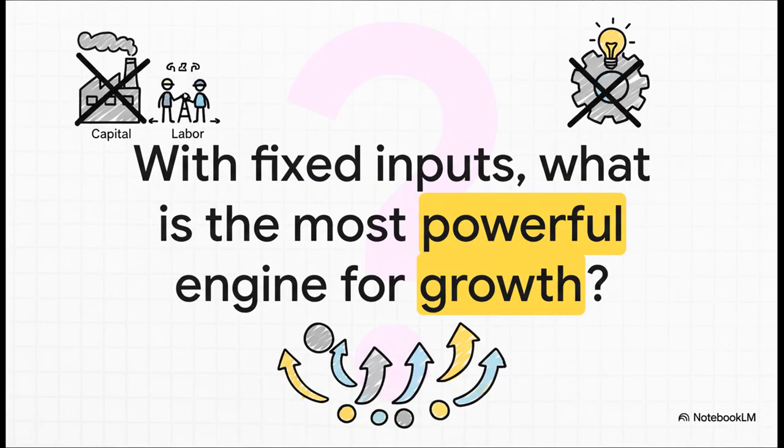And that brings us to a final, pretty powerful thought. Remember how we started all this? We made a huge assumption that capital and labor are fixed, and we also fixed that F variable, technology. So let me leave you with this question. If a country can't just snap its fingers and get more workers or build more factories, what's left? What's the most powerful way for its economy to really grow? Something to think about. Thanks for tuning in.